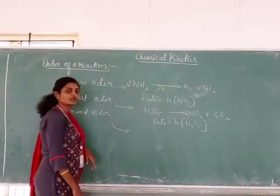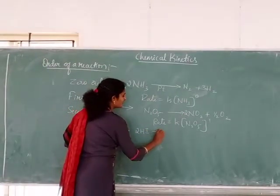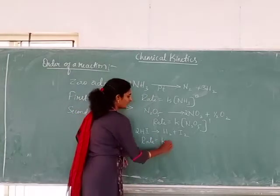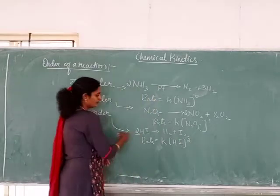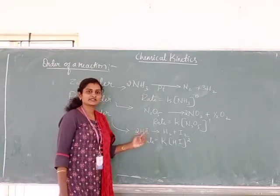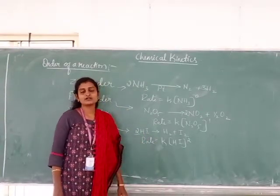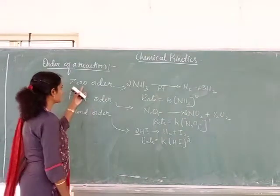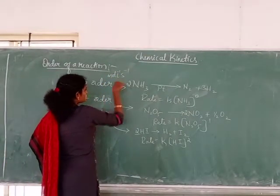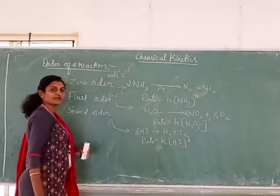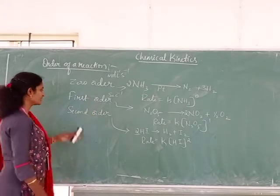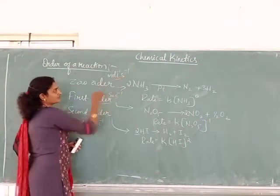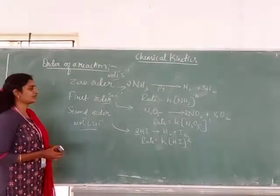Similarly, for second order, the decomposition of hydrogen iodide will form hydrogen and iodine. The rate of the reaction will be equal to K into [HI] to the power 2. Because practically, 2 moles — 2 molecules of hydrogen iodide — will be involved in the reaction. The SI unit of zero order is mol/m³/s, whereas first order is per second, and second order is per mol·m³·s. These are the respective SI units of zero, first and second order reactions.